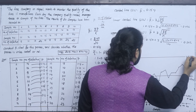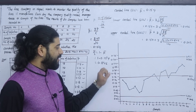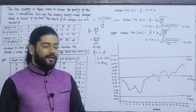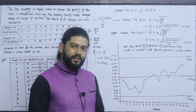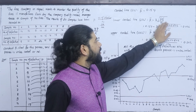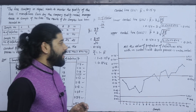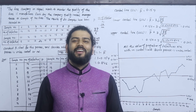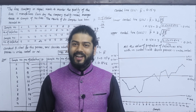The upper control limit is 0.262. Since all the values of the proportion of defectives are within the control limits, the process is under control. If you have any questions, please comment on this channel. Thank you.